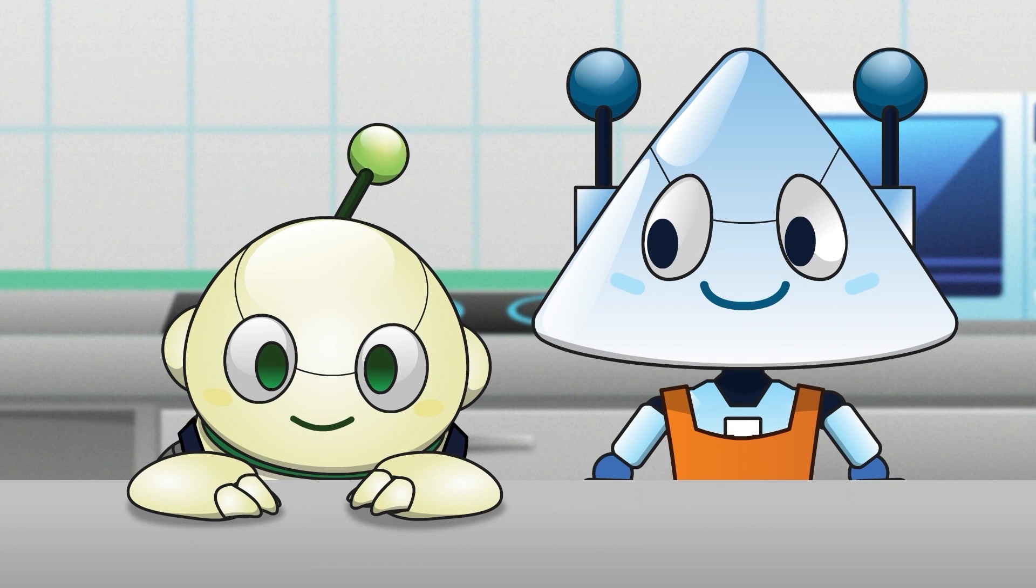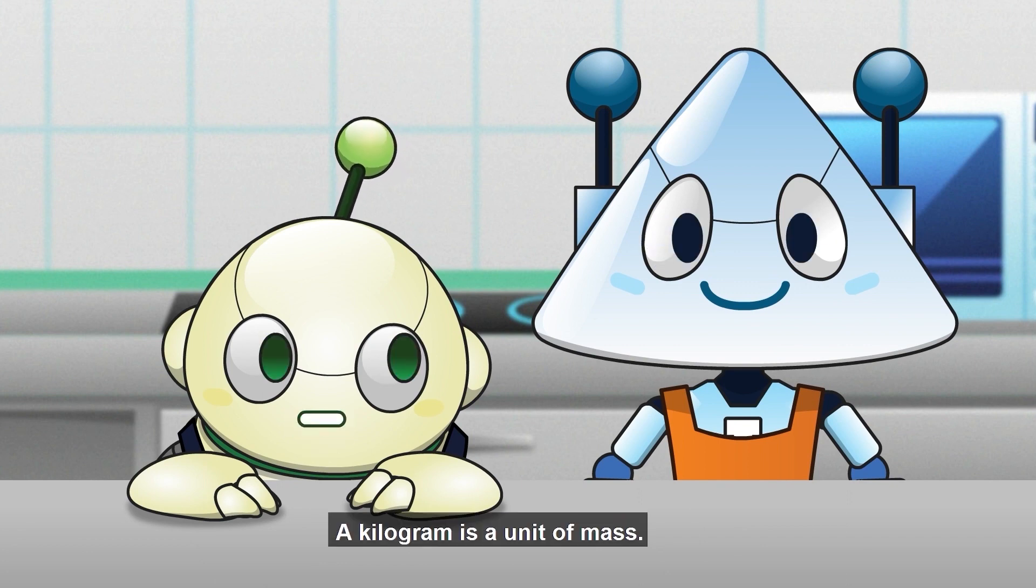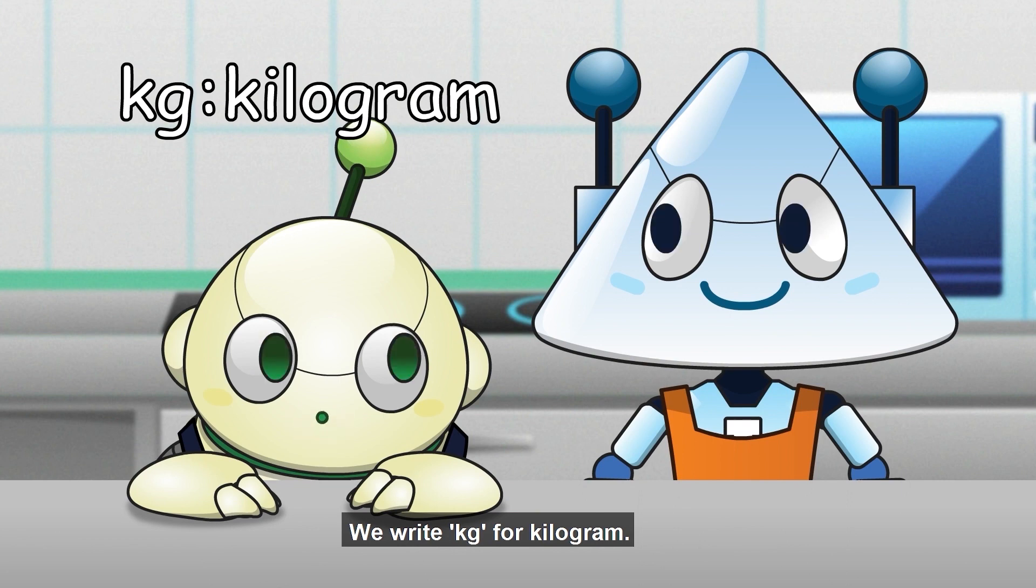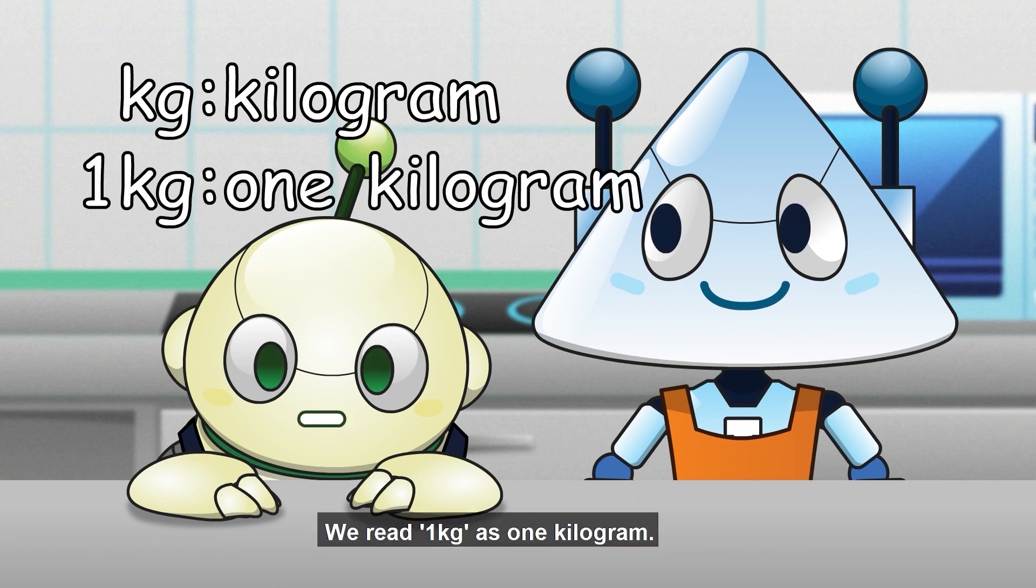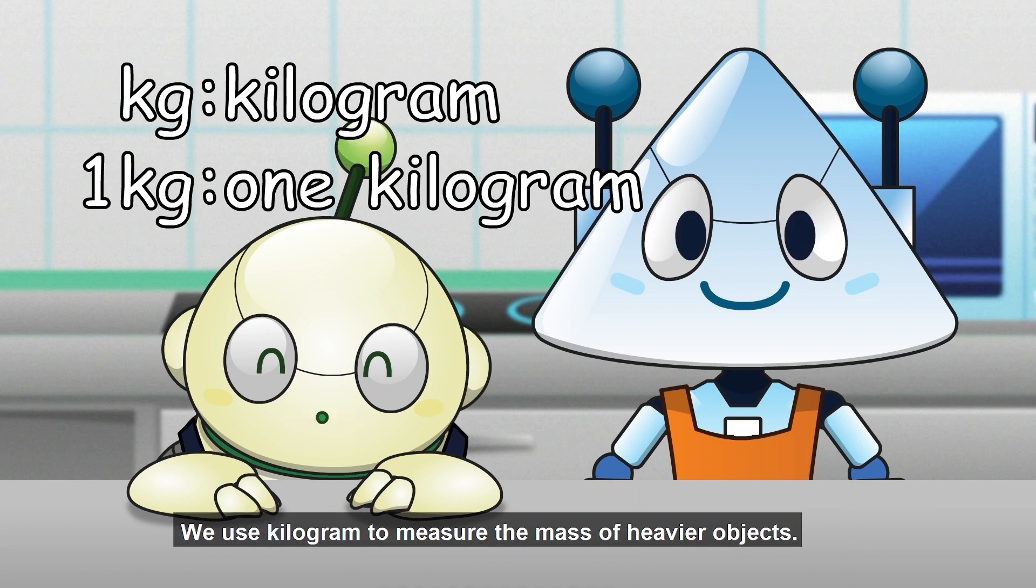What is a kilogram? A kilogram is a unit of mass. We write kg for kilogram. We read 1 kg as 1 kilogram. We use kilogram to measure the mass of heavier objects.